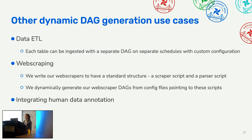Other cases where we use dynamic DAG generation include data ETL — vendors often deliver several tables on different schedules with slightly different configurations, so we generate a separate DAG for each table. We also automate web scraping: at a certain level of abstraction most scrapers are similar — pull HTML, run parsers — so we write all our scrapers with a similar structure that can be automated with dynamically generated DAGs and config files. Another common use case is integrating human data annotation.